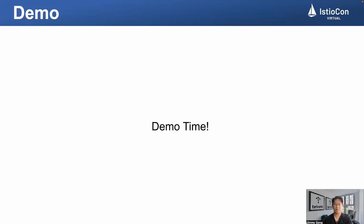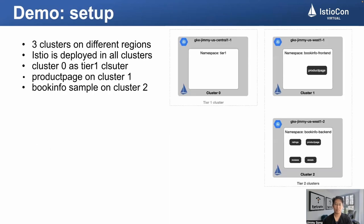Now let's take a look at the demo. This is the deployment architecture: I created three Kubernetes clusters on GKE and deployed Istio in each cluster. These three clusters are located in different regions — US Central 1, US West 1, and US West 2. I also deployed the BookInfo application in two Tier 2 clusters. One only deployed the product page service, and the other cluster deployed the entire services.